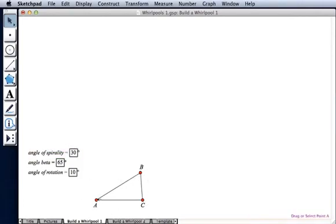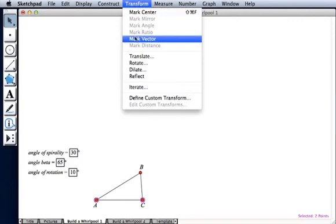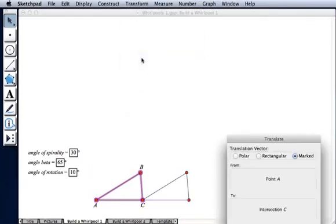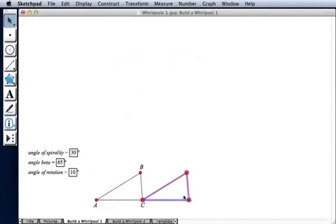I'll start by taking this triangle and translating it by vector AC. To do so, I'll select point A and then point C and choose Transform, Mark Vector. I'll then select the entire triangle and choose Transform, Translate. And now we have a copy of the triangle sitting end-to-end.